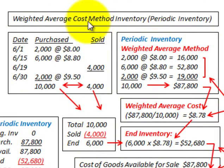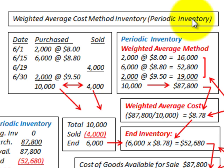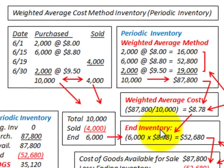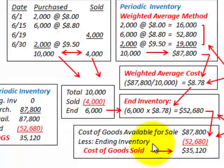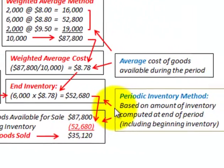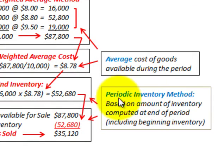What we're going to be looking at here is a weighted average cost method to determine our inventory, and we're going to be using that with the periodic inventory method. We have to determine the weighted average cost of our inventory to find the ending inventory value and the cost of goods sold for the period. But before we get into that, let's look at what we mean by the periodic inventory method.